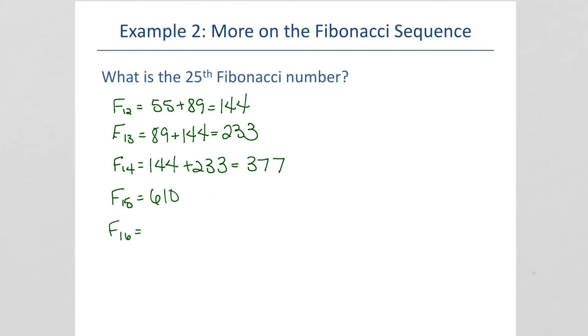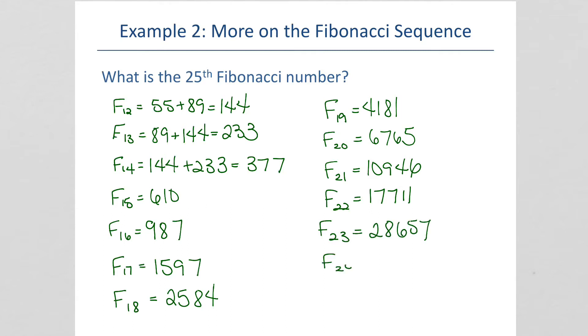And so forth. 377 plus 610 is 987. 610 plus 987 is 1597. 987 plus 1597 is 2584. And we just keep going. 75,025 is the 25th number in the Fibonacci sequence.